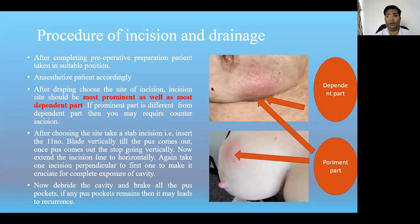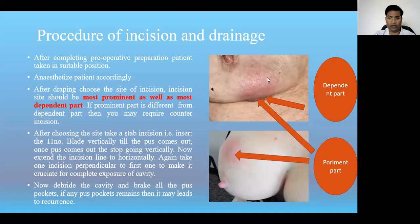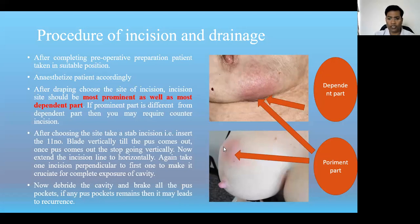Sometimes the most prominent part may not be the most dependent part. As seen in this picture of a breast abscess, if the most prominent part is at the bottom, it is also the dependent part when the lady sits in a sitting position, which is the ideal condition for giving the incision — either linear or cruciate. However, if the abscess is in the upper outer quadrant, that prominent part is not the dependent part.